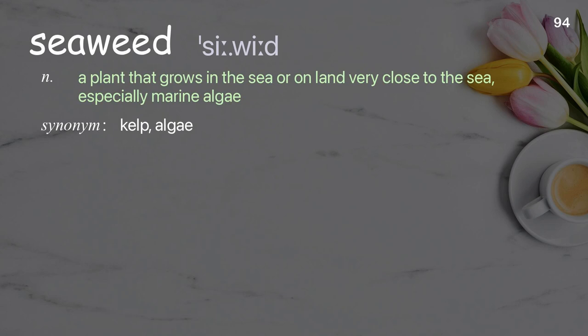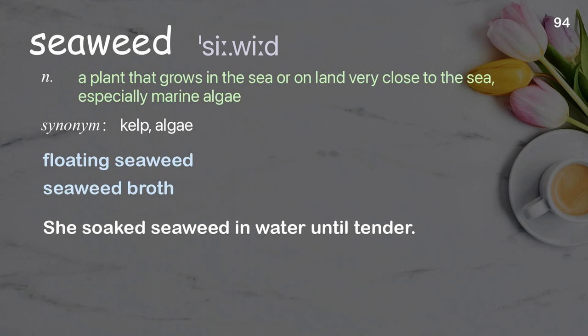Seaweed: A plant that grows in the sea or on land very close to the sea, especially marine algae. Examples: Floating seaweed, seaweed broth. She soaked seaweed in water until tender.